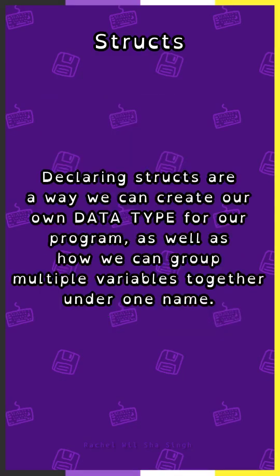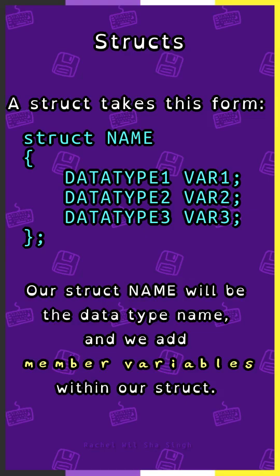Structs are a way that we can create our own data type for our program, as well as how we can group multiple variables together under one name. A struct takes this form: the keyword struct, a name, an open curly brace, a sequence of declared variables, a close curly brace, and a semicolon. Our struct name will be the data type name, and we add member variables within our struct.